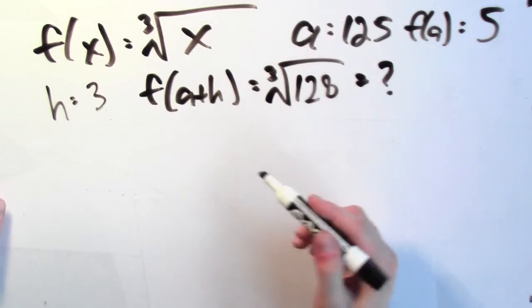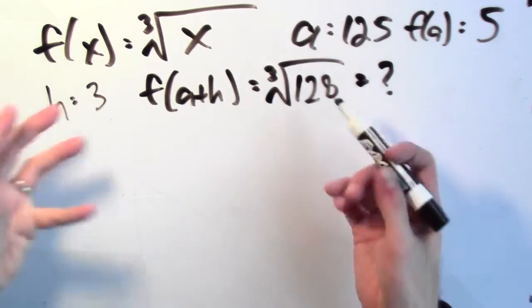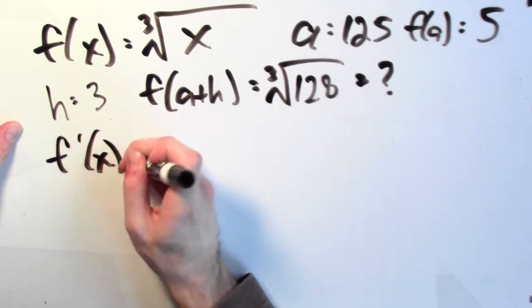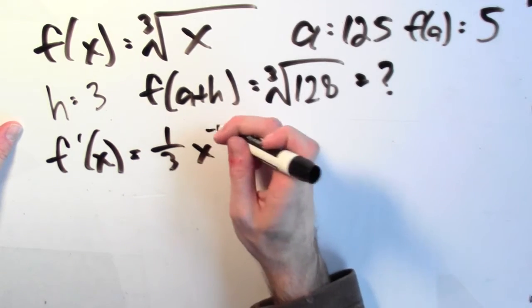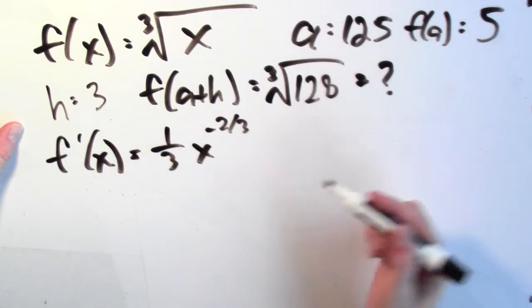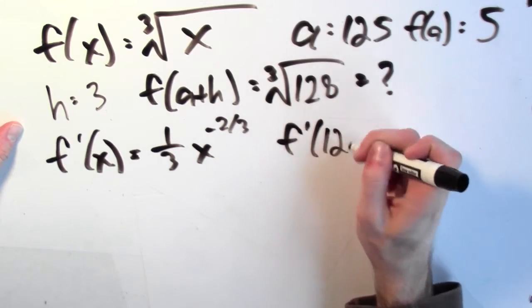But I can use the derivative here. The derivative tells me how wiggling the input affects the output. So I should compute the derivative of this function at the input a. Let's differentiate this function. This is x to the 1/3. So the derivative is 1/3 times x to the -2/3. This -2/3 is 1/3 minus 1. It's a power rule. Let's compute the derivative at the input 125.